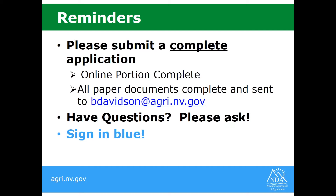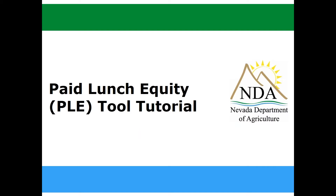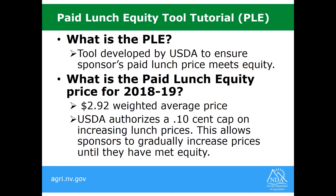Here is a timeline: all RCCIs should submit their applications by May 15th, and for all school districts, charter schools, and Special Milk, applications are due June 1st. A few reminders: please submit a complete application, meaning your online portion is complete and all paper documents are sent in one package to myself — either to my email address or our SPARC's office. If you have questions, please ask; we are more than willing to help. And lastly, please sign in blue — many applications have been held up because signatures are not in blue, so when in doubt, sign in blue.